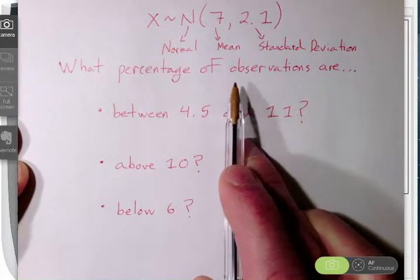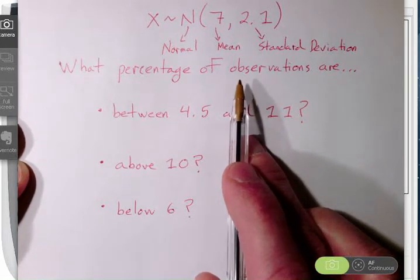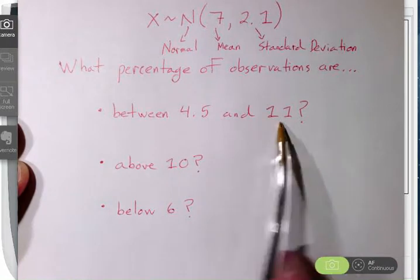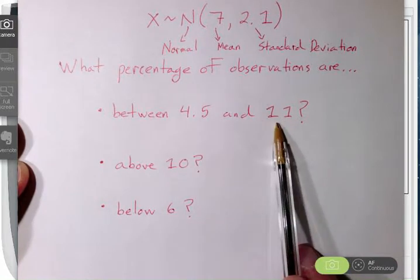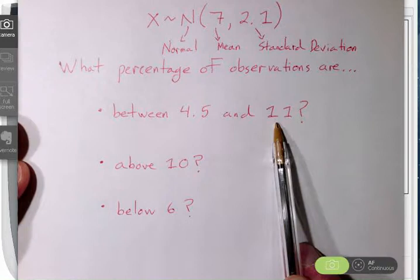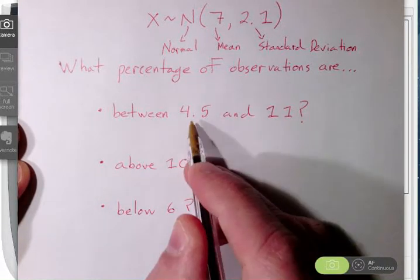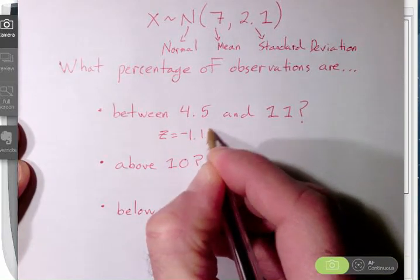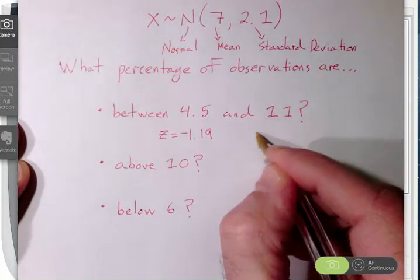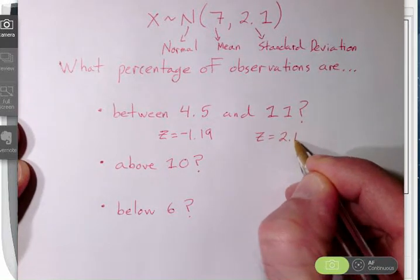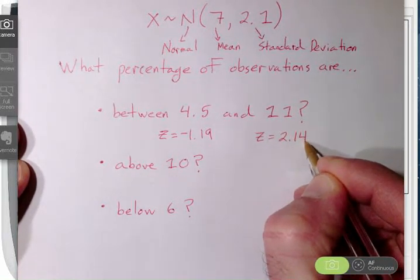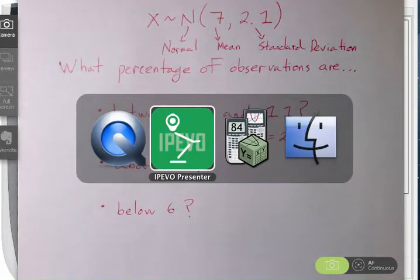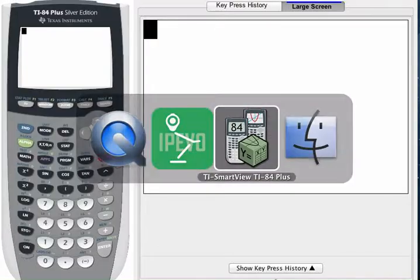If I am interested in finding the percentage of observations that are, for instance, between a lower and an upper boundary, between 4.5 and 11, it is most convenient to change those into Z scores, and then we can use our shade norm command. So I have already calculated the Z scores for 4.5, that Z score would be negative 1.19, and for 11 that Z score is 2.14.